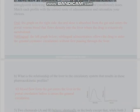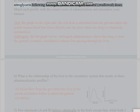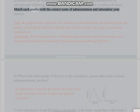Part A: Shown below are hypothetical profiles for the plasma pharmacokinetics of nitroglycerin following sublingual (under the tongue) and oral (swallowed) doses. Match each profile with the correct route of administration and rationalize your choices.